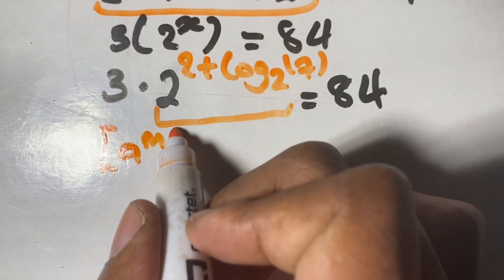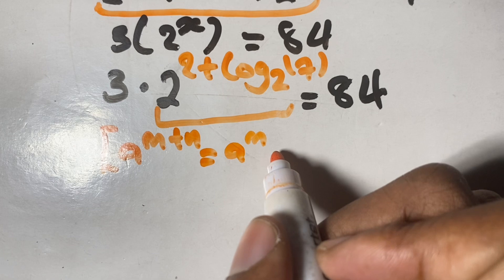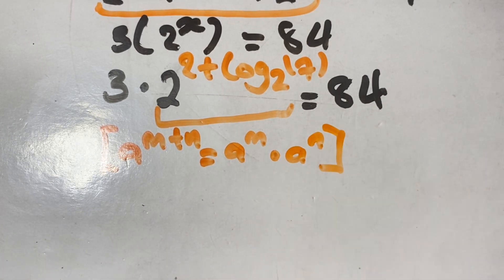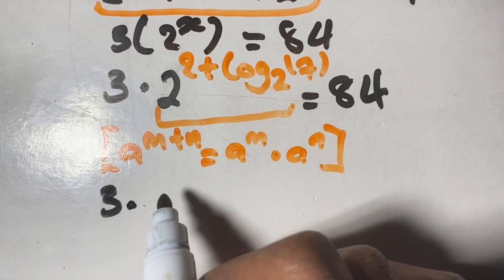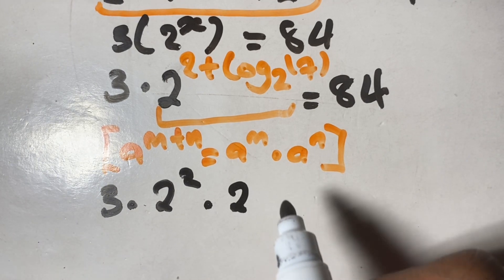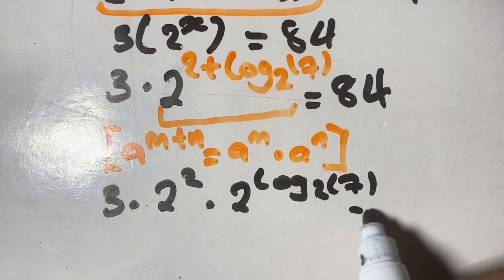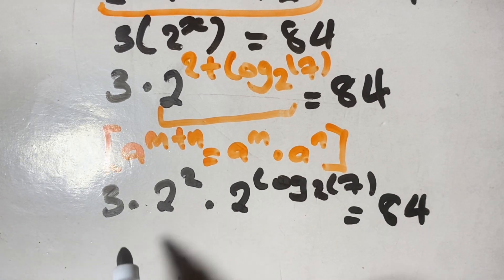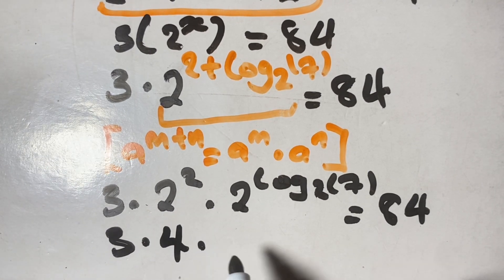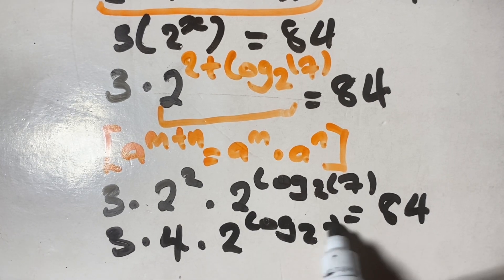We can simplify this using our algebraic rule: a to the power of m plus n is equal to a to the power of m times a to the power of n. So our equation can be written as 3 times 2 squared times 2 to the power of log base 2 of 7, equals 84. That gives us 3 times 4 times 2 to the power of log base 2 of 7.